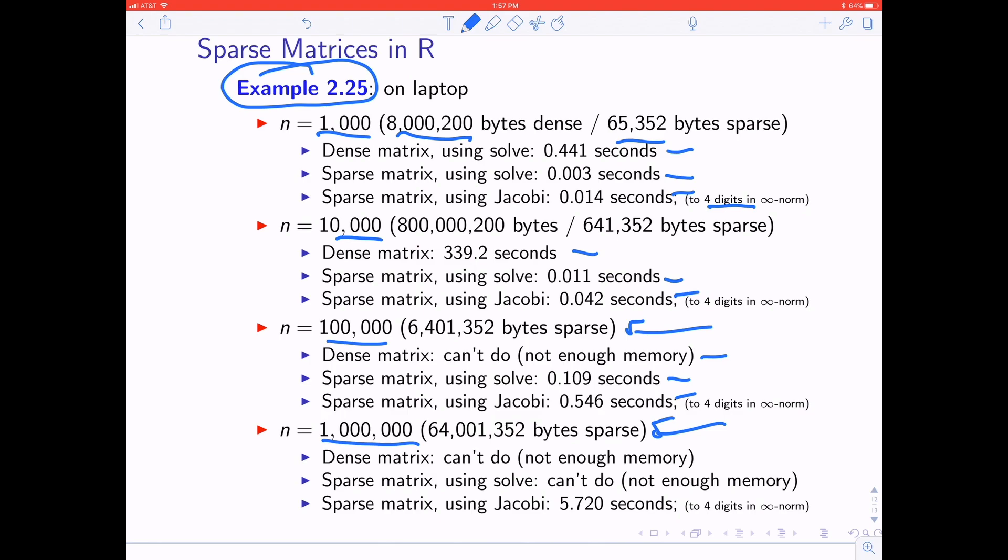But now finally, if you get up to a million, you can't do the dense matrix solve. You can't even do the sparse matrix solve. So you can do Jacobi, and that turns out to only take just about six seconds, which is pretty good for a million by million matrix. This is trying to give you a sense of how things scale, and that what the appropriate method is is highly contextual and certainly depends strongly on the size of the problem you're solving. All right, thanks for listening.